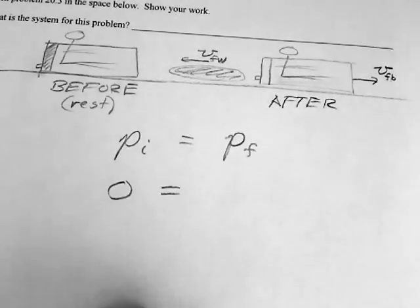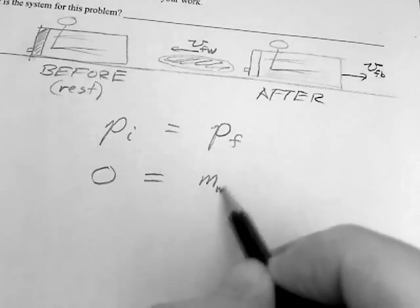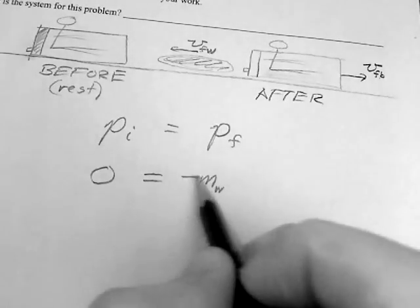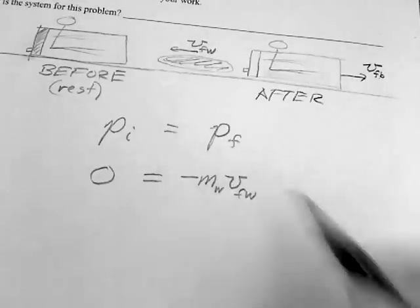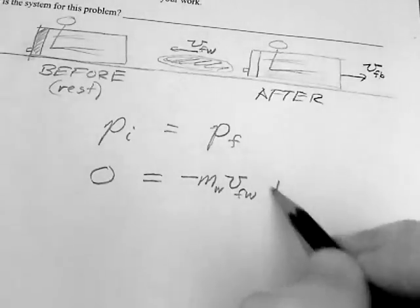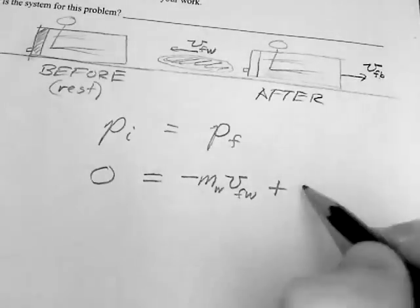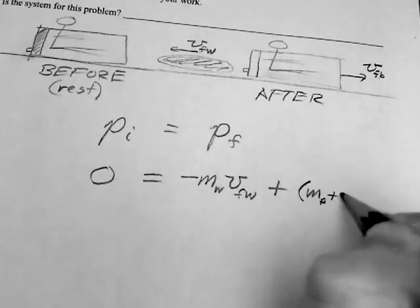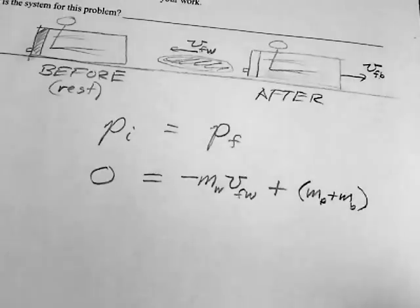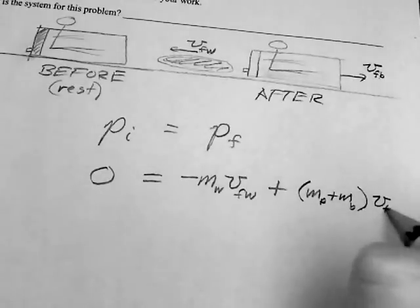Afterwards, we have the water, so we'll say mass of the water moving back to the left. We'll put a minus sign on that since momentum is a vector quantity. And then the velocity of the boat needs to have the mass of the person, the passenger, plus the mass of the boat, times the velocity of the boat final.